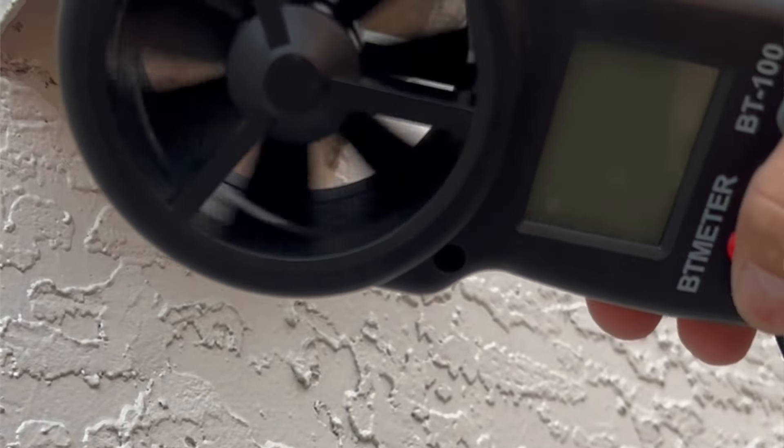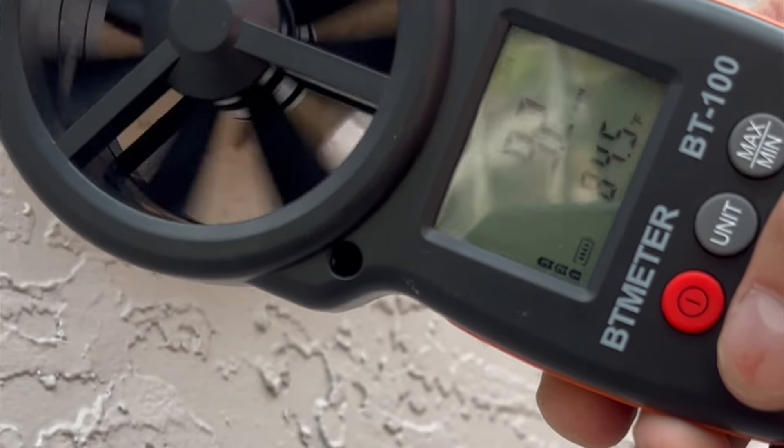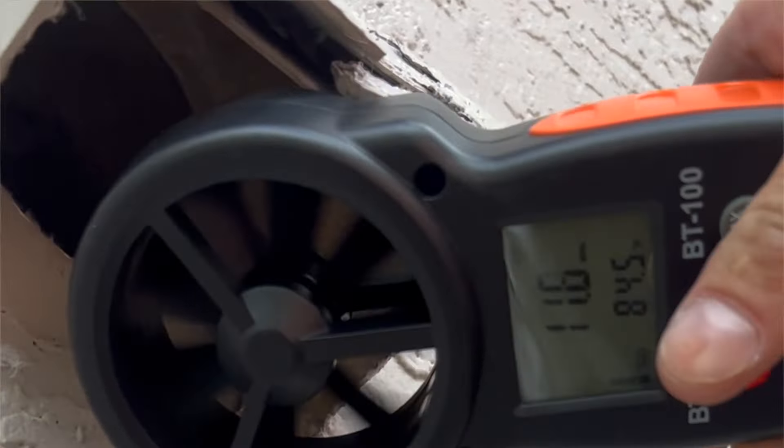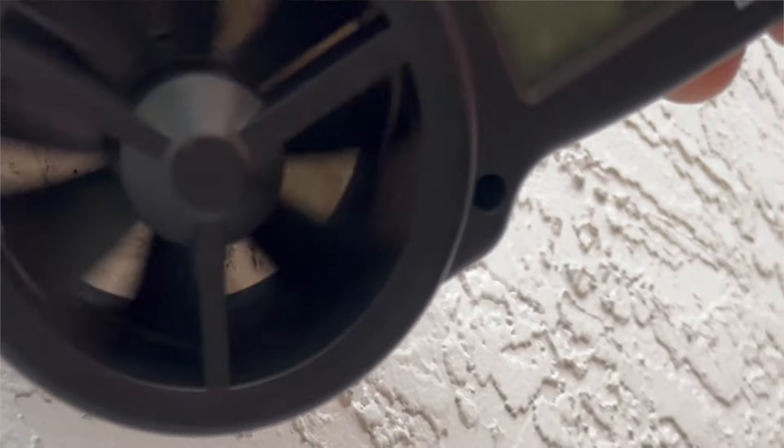If you have access to your vent, if it's on the first floor, then you could actually go outside and just double-check. Put your hand in front of it and make sure that there is airflow coming out of the dryer vent and that everything is good. It should be blowing nice and hard. This one was a really small short run.